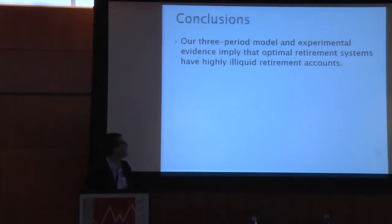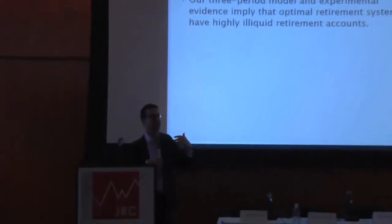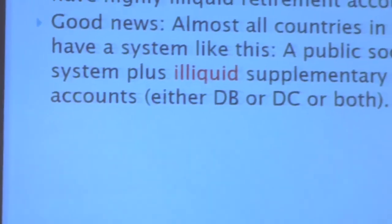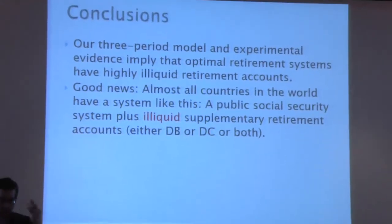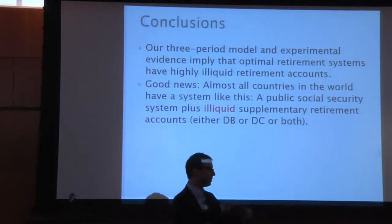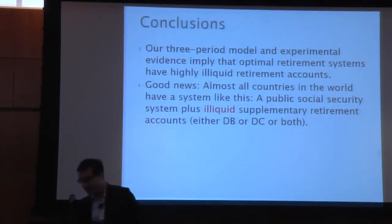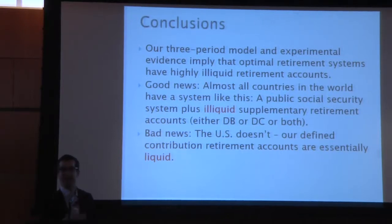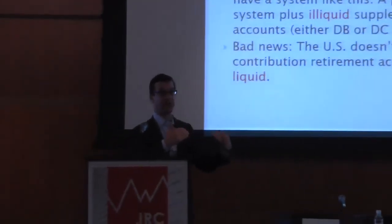Conclusions: our three-period model and experimental evidence imply that optimal retirement savings systems have highly illiquid retirement accounts. Obviously this is a speculative claim — this little bit of evidence and theory won't convince anyone to change the retirement savings system. But it's food for thought. The good news is that almost all countries in the world have a system like this: a public social security system plus a completely illiquid supplementary retirement account system. Everywhere else in the world, 401Ks, DBs — the whole system is basically completely illiquid. Unfortunately we're the exception, and this work starts a conversation about the optimality of the very flexible and highly prone-to-leakage US retirement savings system.